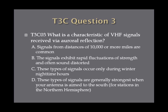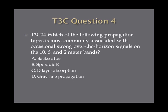Question 3. What is a characteristic of VHF signals received via auroral reflection? A. Signals from distances of 10,000 or more miles are common. B. The signals exhibit rapid fluctuations of strength and often sound distorted. C. These types of signals occur only during winter nighttime hours. D. These types of signals are generally strongest when your antenna is aimed to the south for stations in the northern hemisphere. Question 4. Which of the following propagation types is most commonly associated with occasional strong over-the-horizon signals on the 10, 6, and 2 meter bands? A. Backscatter. B. Sporadic E. C. D-layer absorption. D. Grayline propagation.